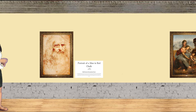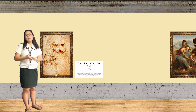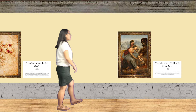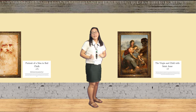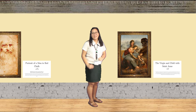The next painting is a Portrait of a Man on Red Chalk. The medium used is red chalk on paper. It depicts the head of an elderly man in three-quarter view — the head turns towards the viewer. The next painting is the Virgin and the Child with Saint Anne. The medium used is oil on wood. It depicts Saint Anne with her daughter, Virgin Mary, and infant Jesus Christ.